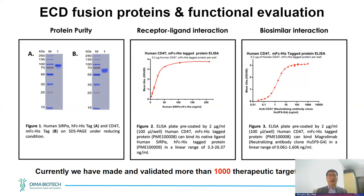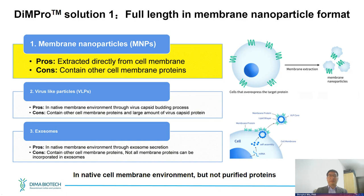Our ECD fusion protein technology platform purifies proteins from HEK suspension cell systems. To ensure native function, if the protein has an authentic native ligand or receptor, we express them individually and do binding assays. If the target has an FDA-approved or clinical-trial antibody drug, we also synthesize biosimilar drugs to bind to the antigen to confirm native structure. Currently we have made and validated more than 1,000 therapeutic target proteins using this approach.